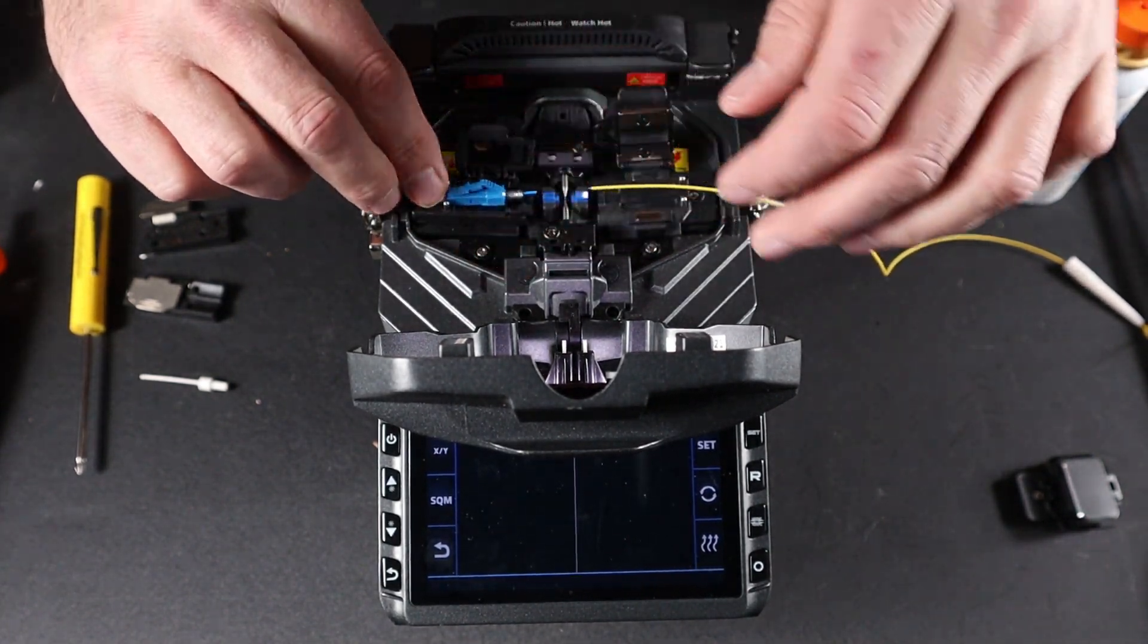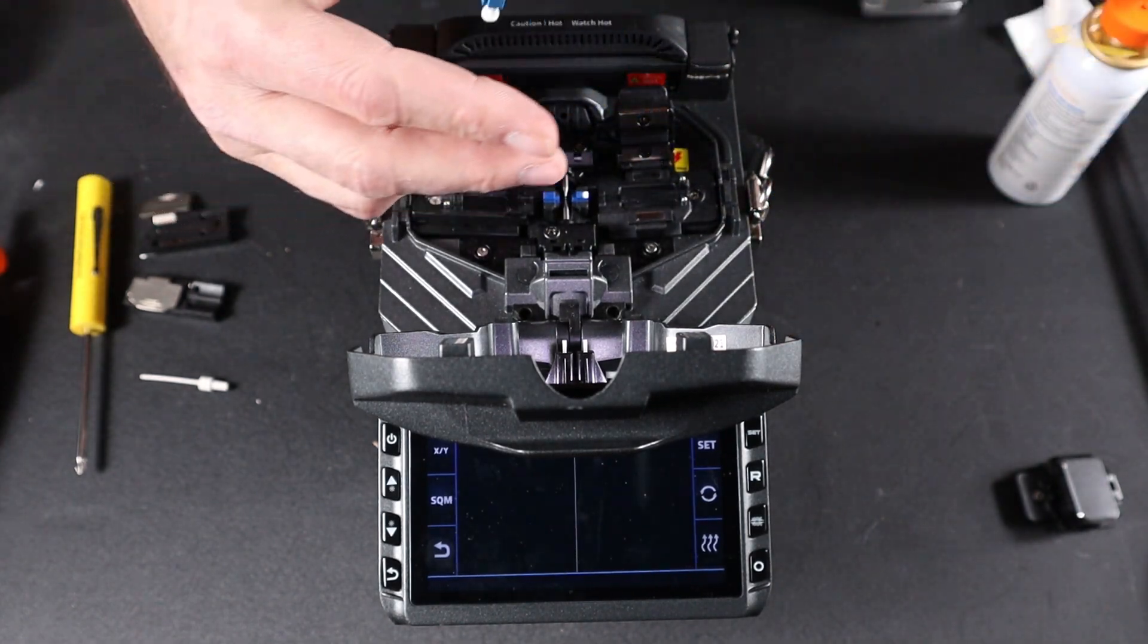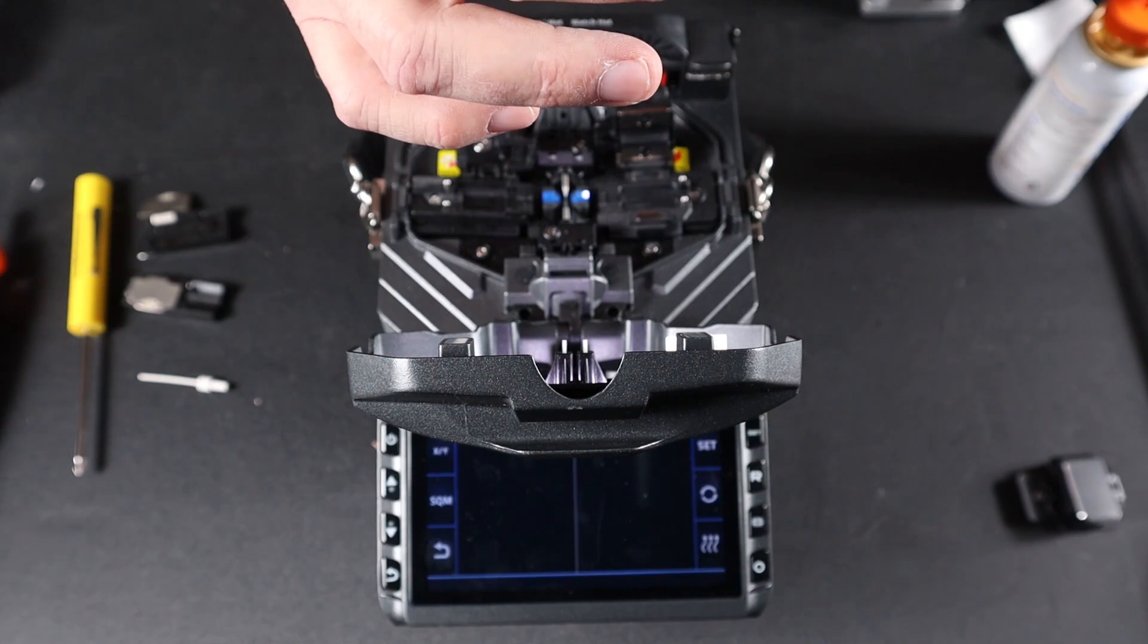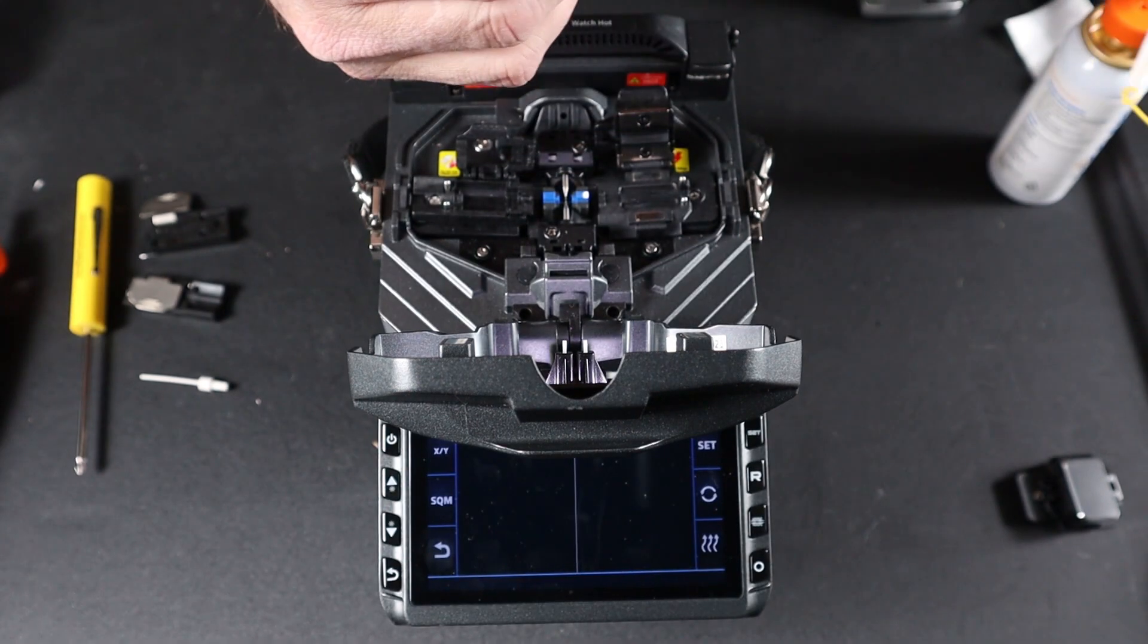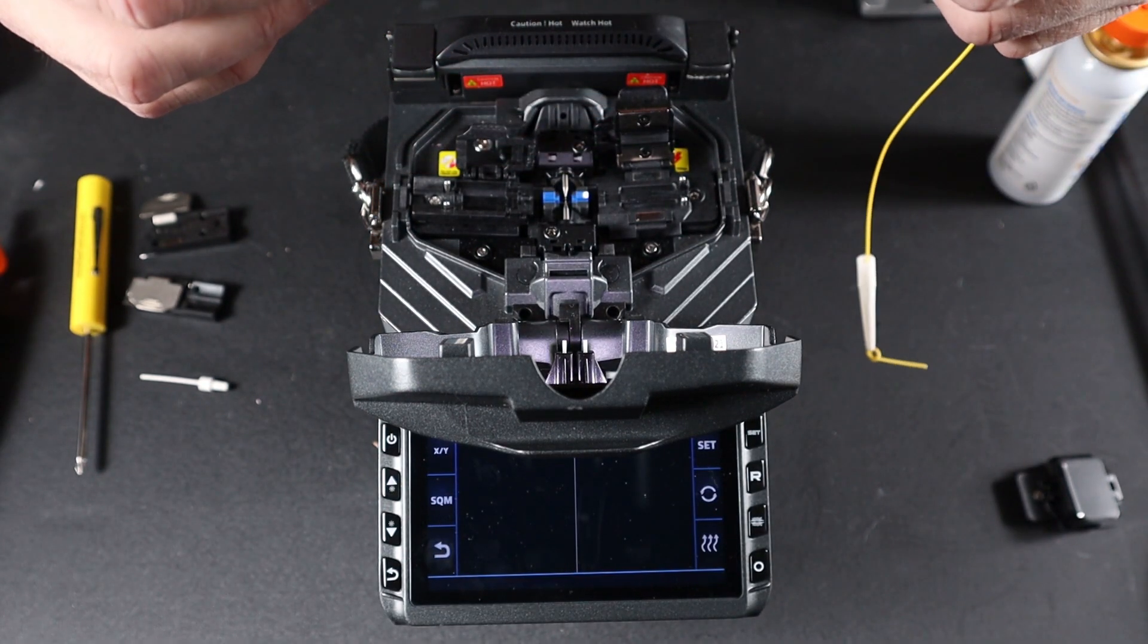Open your holders. Remove your connector. And bring down your shrink tube to the back of the metal connector.